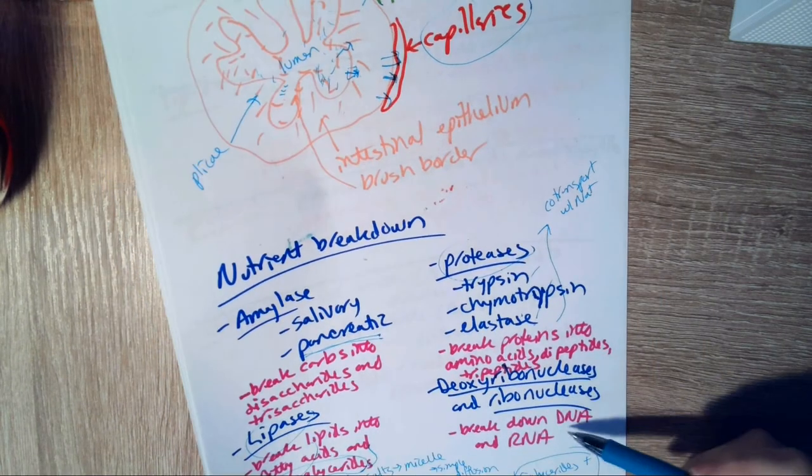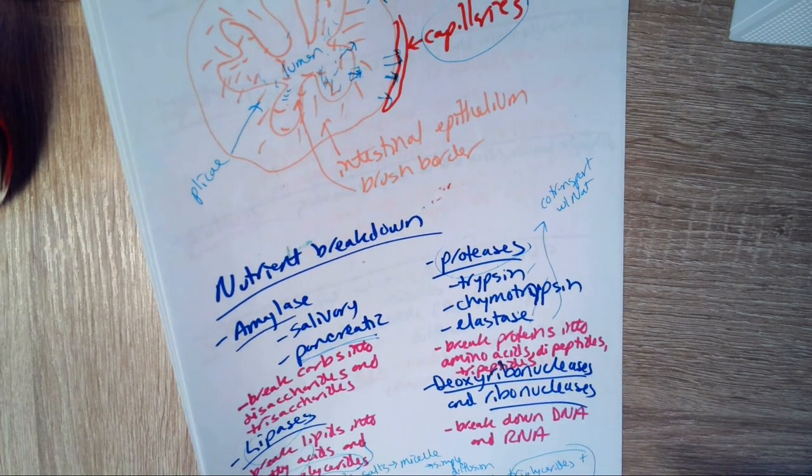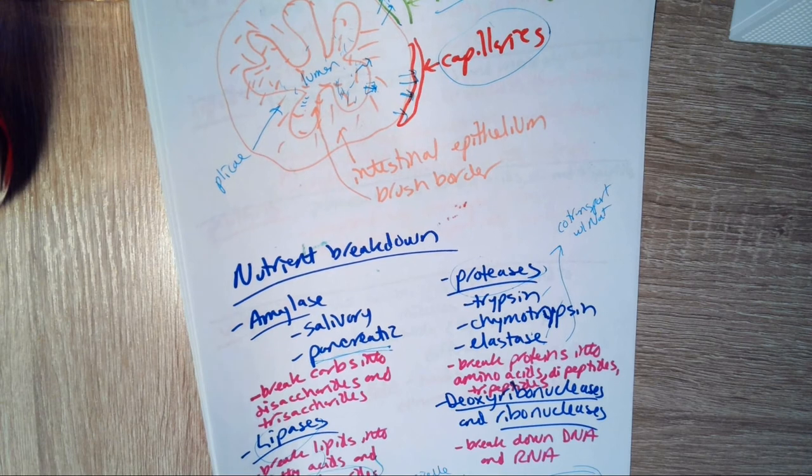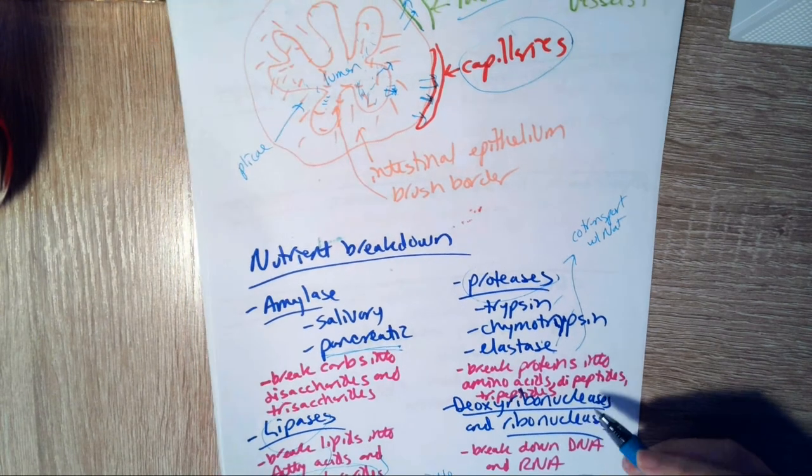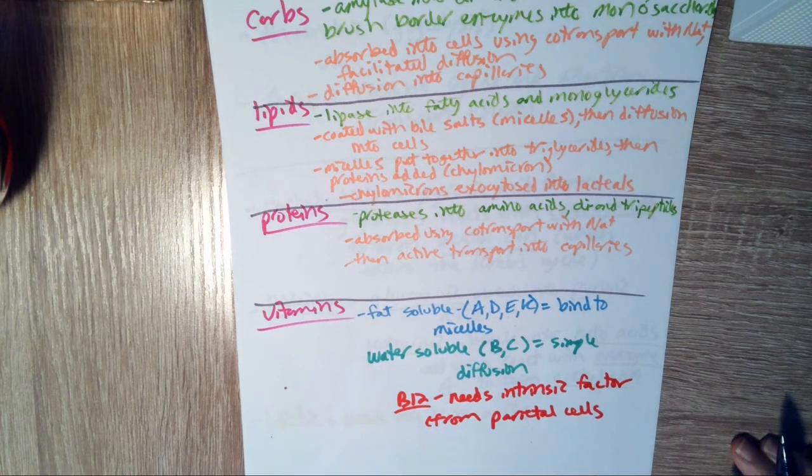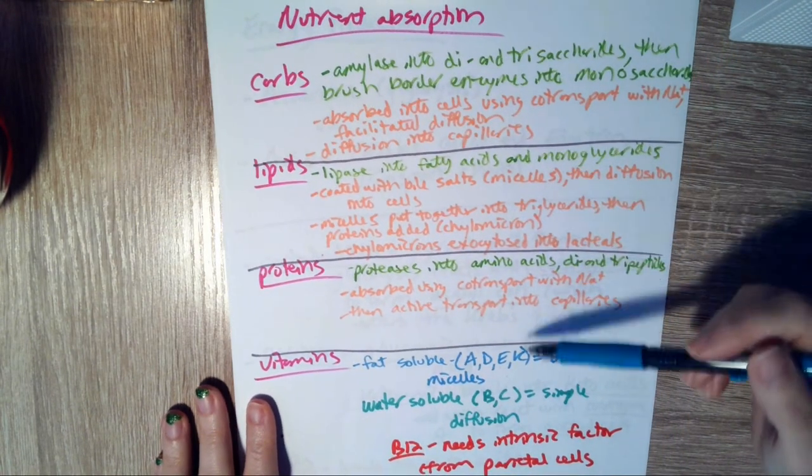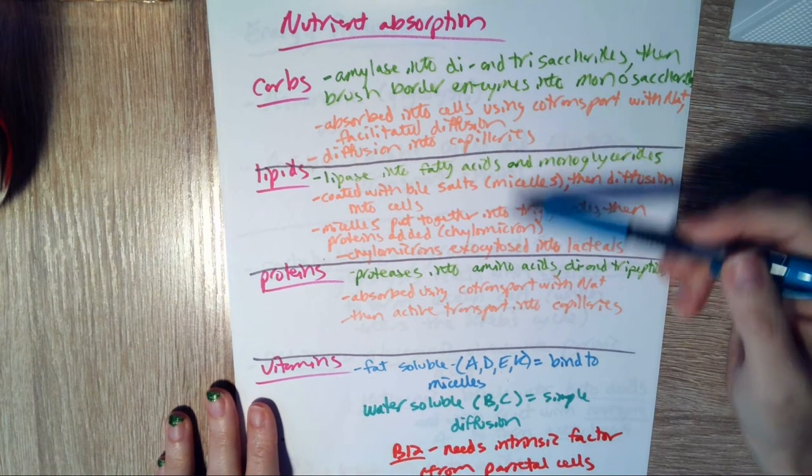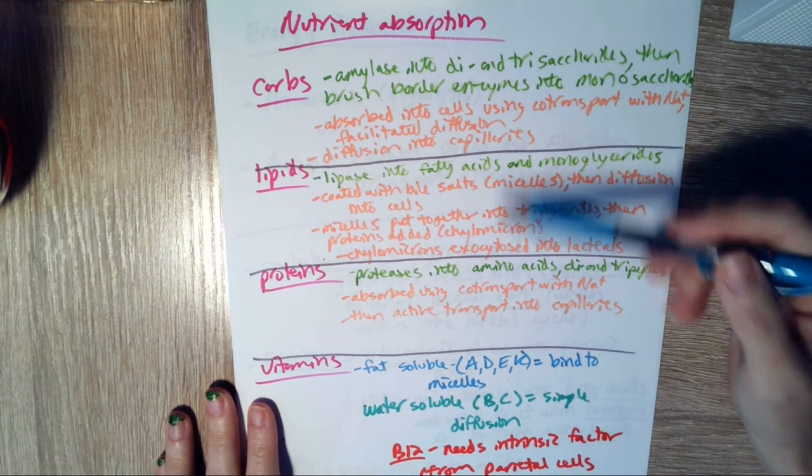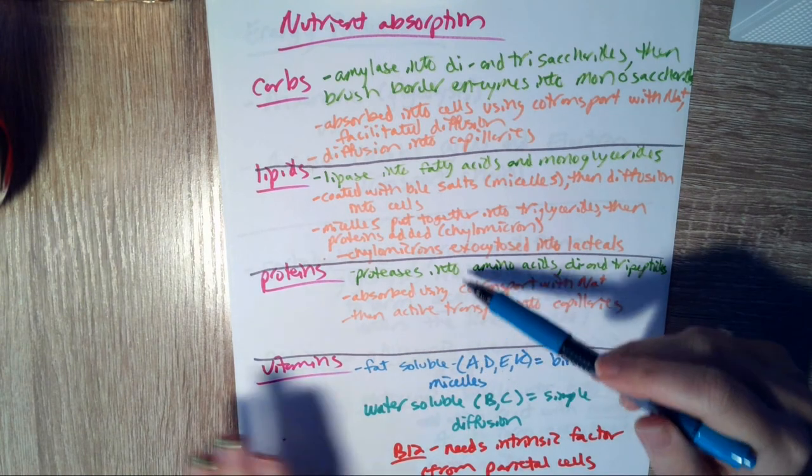Now, we also have DNA and RNA that can be broken down with deoxyribonucleases and ribonucleases. And those are also in pancreatic juice. So now we've broken down all of those nutrients and they can be absorbed. Here is just a breakdown. Sorry for this stupid pun. It's a breakdown of what we just talked about, how we absorb all of those nutrients.